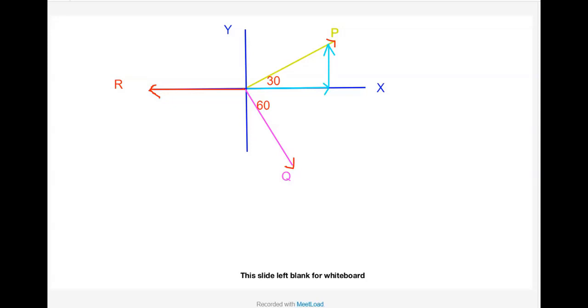Wait a minute. I'm just taking a general example. I'm not discussing some particular question, so that's why. So P cos 30 degrees and here it is P sin 30.